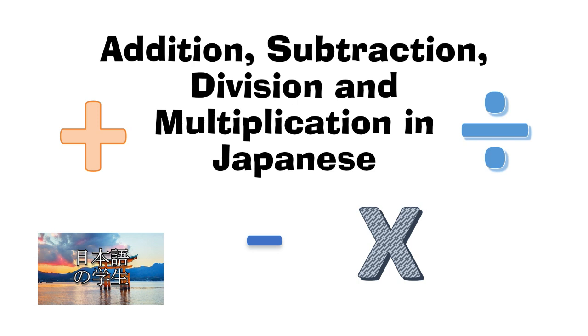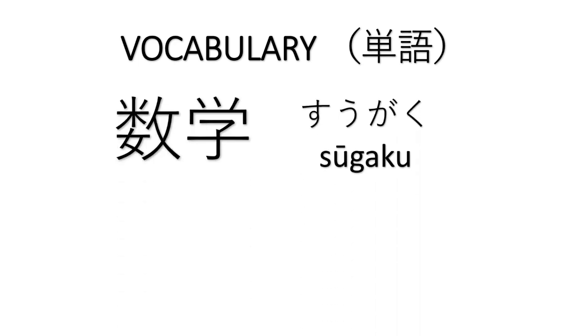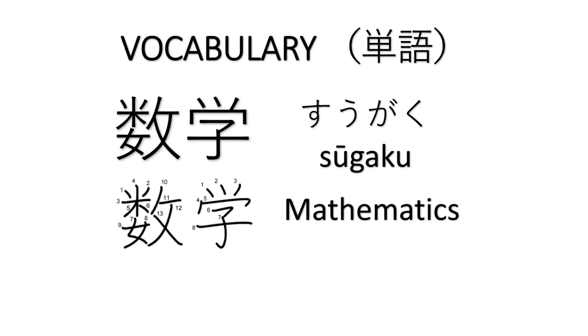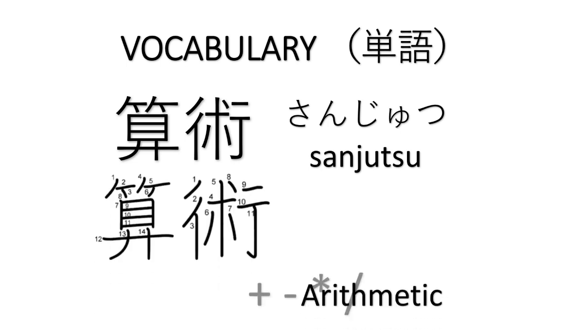In this lesson we are going to learn the basic arithmetic operations in mathematics in Japanese. Let's start with vocabulary. We have sugaku, which means mathematics. Next is sanjutsu, which means arithmetic.